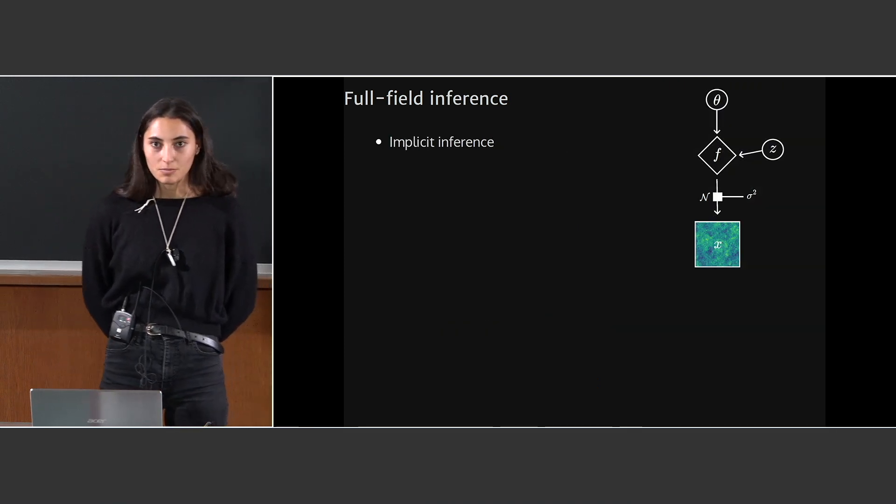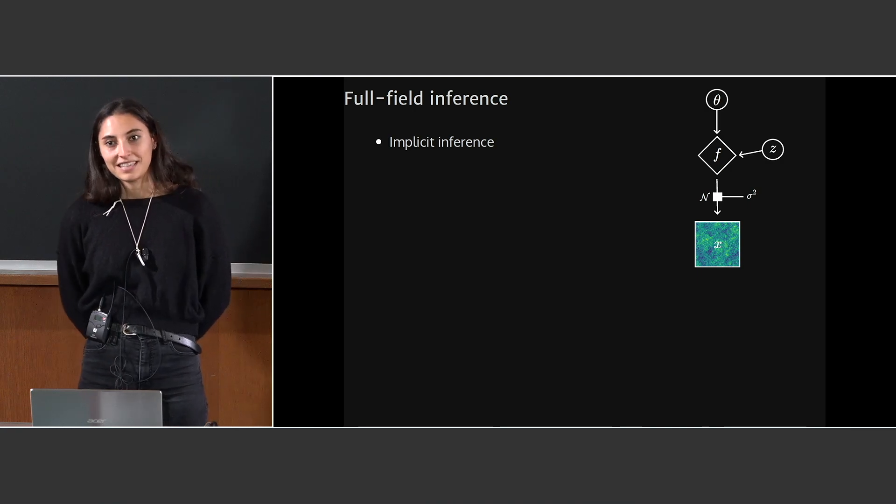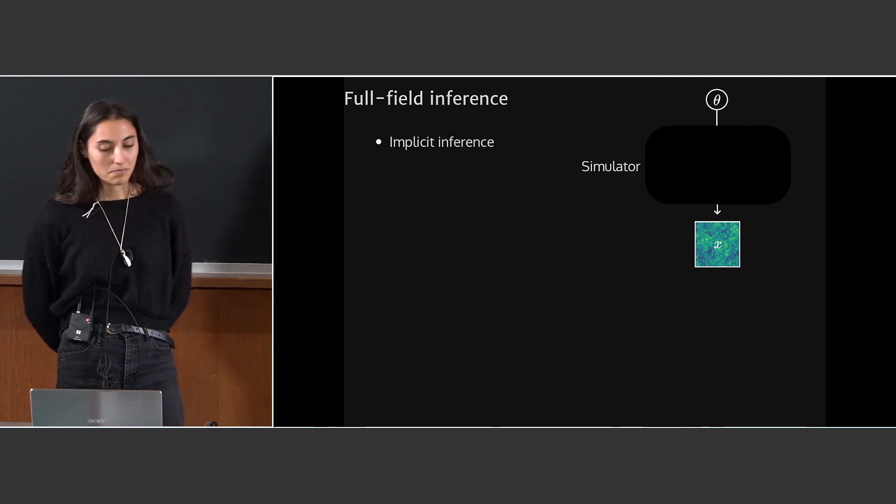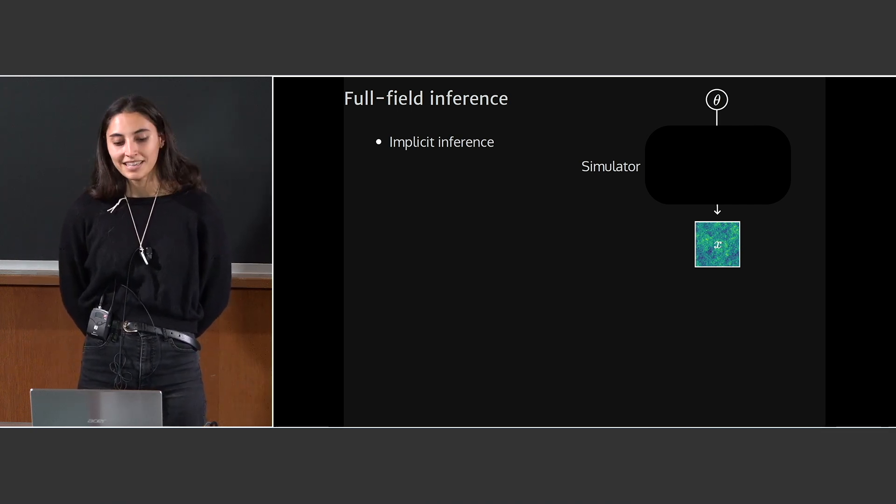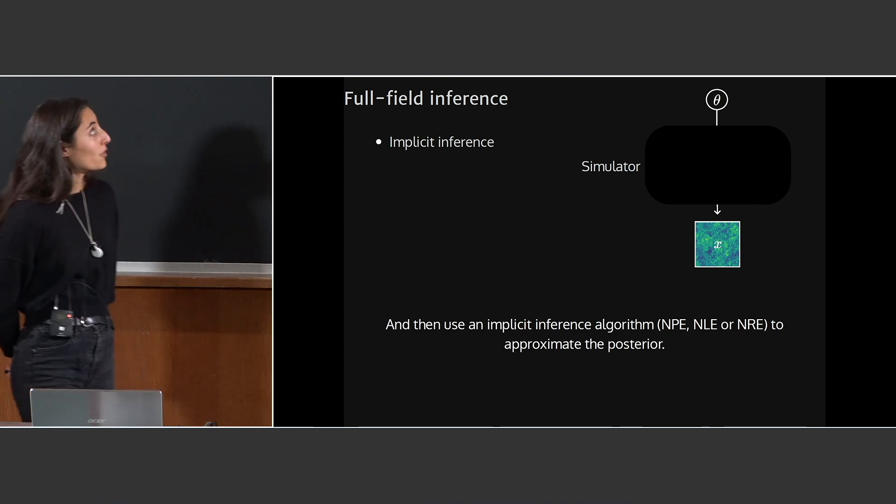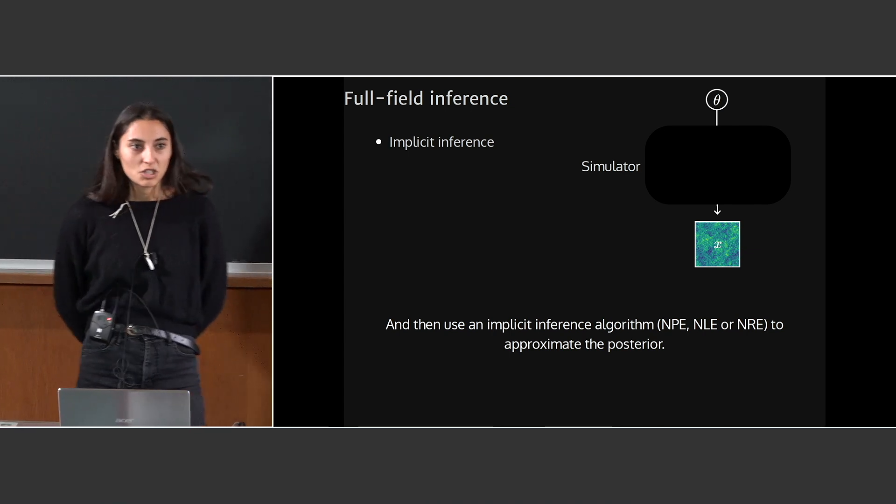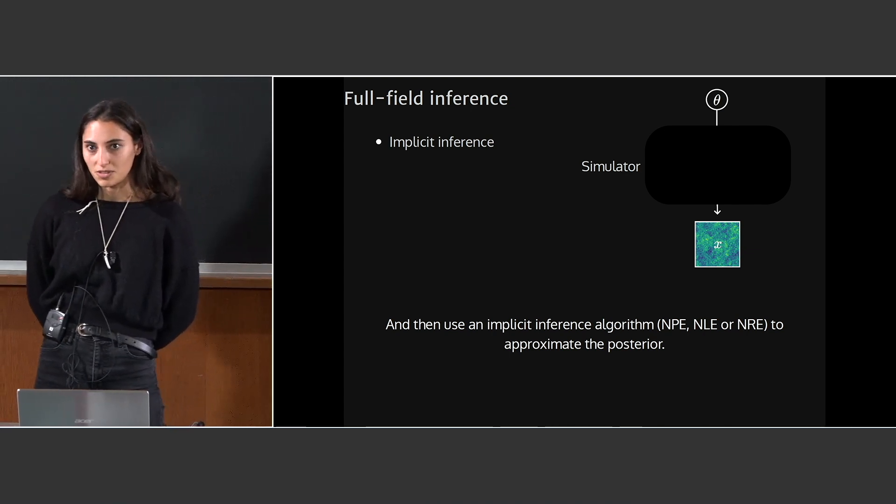Or you can do implicit inference, meaning that in this case your explicit BayHM doesn't have to be explicit anymore. It can be implicit, a so-called black box simulator. And you can use simulation-based inference algorithms to recover the posterior at the end.